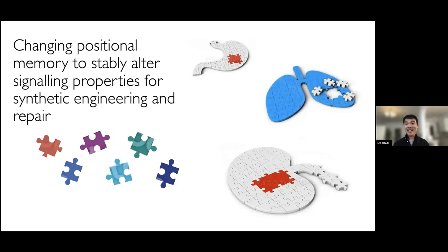Just to finish up and give you an idea of the bigger picture: we think we've taken a first step towards being able to change positional memory in regenerative cells as a means to stably alter their signaling properties. And I think that's really exciting because if we look at similar jigsaw puzzle piece properties across different tissues, this may allow us to unlock latent abilities to combine jigsaw pieces within and between tissues in synthetic engineering and repair applications — something I'd love to follow up on in the future.